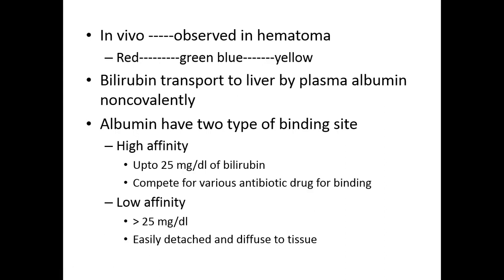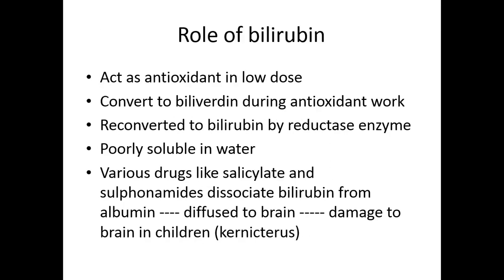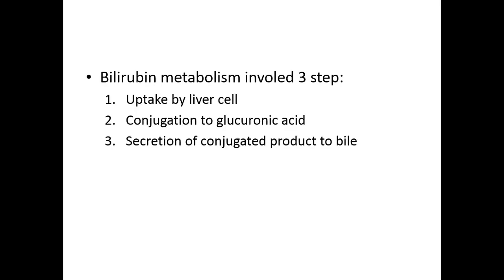Albumin has two types of binding affinity — high and low. Whenever the concentration of bilirubin increases in the blood, the extra bilirubin has low affinity for albumin and can easily diffuse to peripheral tissues, mainly the brain, because the BBB layer is easily crossed by unconjugated bilirubin. Unconjugated bilirubin is water-insoluble and lipid-soluble — a lipophilic molecule. Overall, metabolism is divided into three groups: uptake, conjugation, and excretion by hepatocytes.